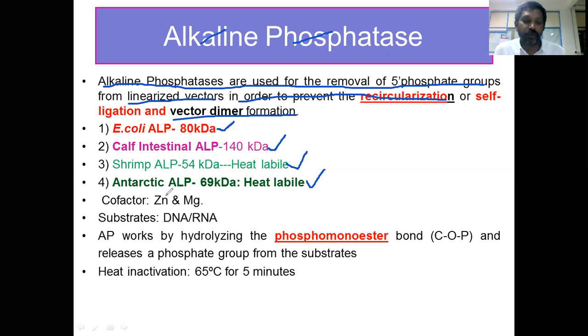The cofactors of these alkaline phosphatases are zinc and magnesium. These alkaline phosphatases remove phosphate groups from DNA and RNA.